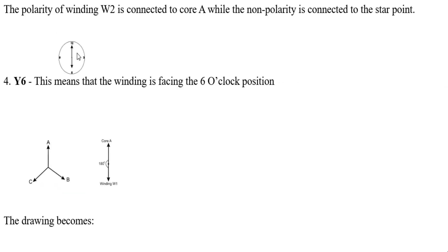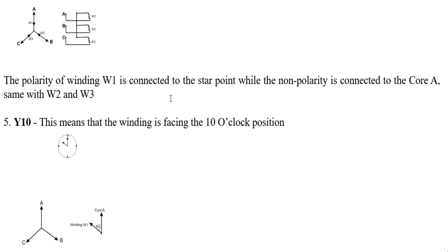Y6 shows 6 o'clock. At 6 o'clock the windings are 180 degrees apart, and the winding arrow is facing down. This means the polarity sides of all three windings are connected to neutral, while the non-polarity side of W1 is connected to A, the non-polarity side of W2 is connected to B, and the non-polarity side of W3 is connected to C.